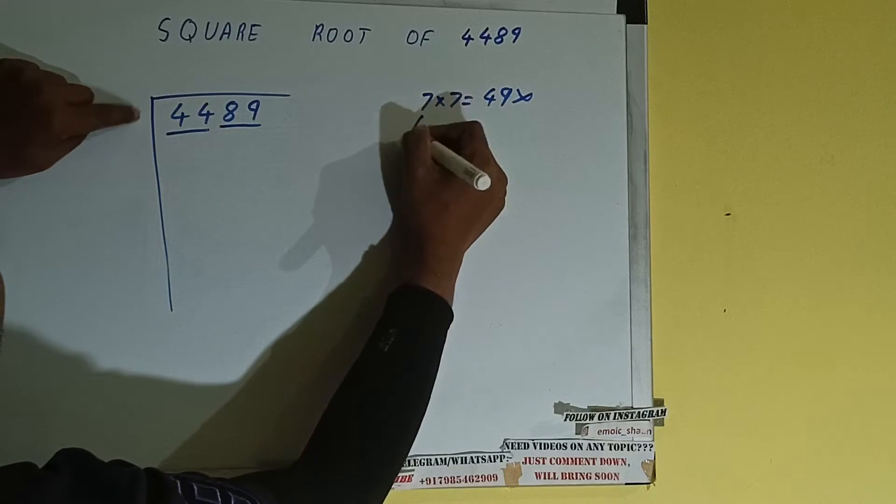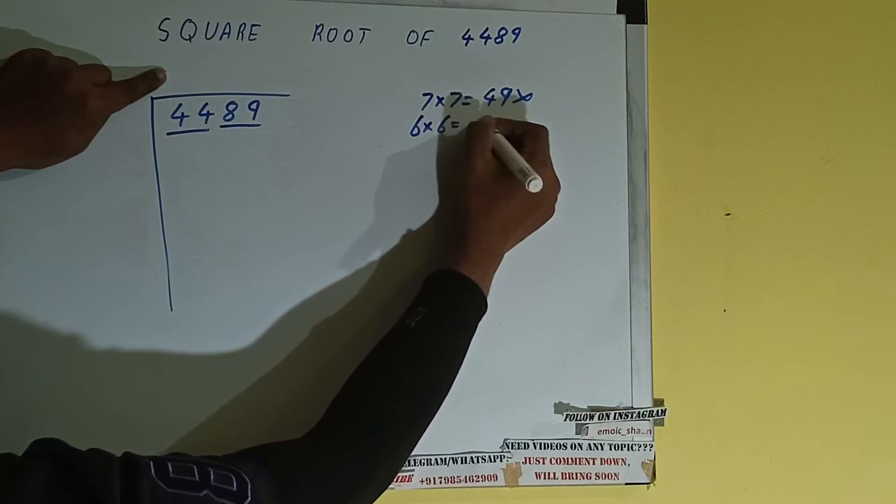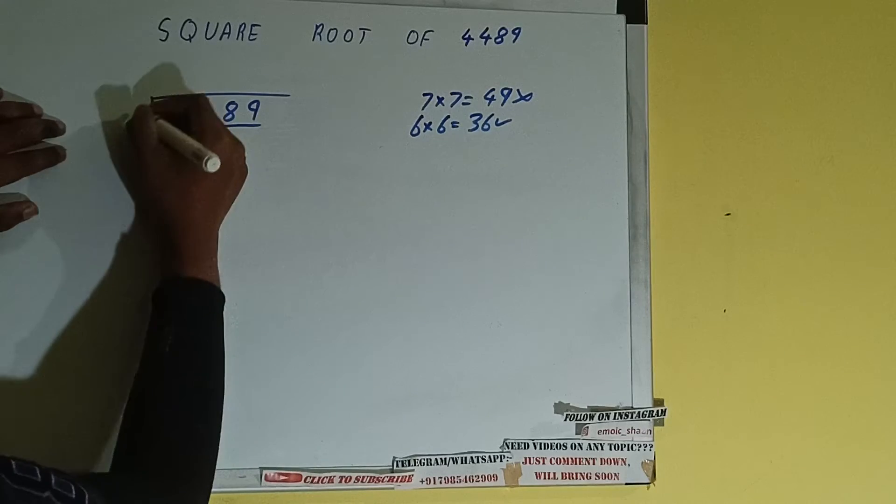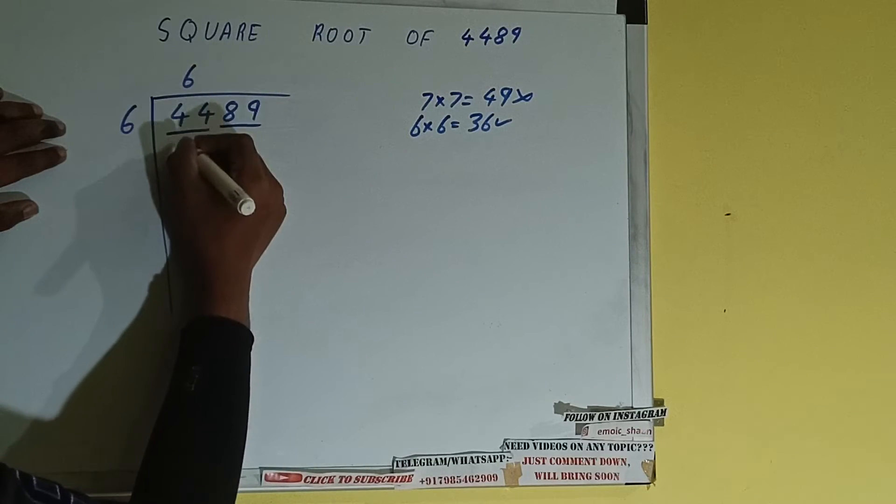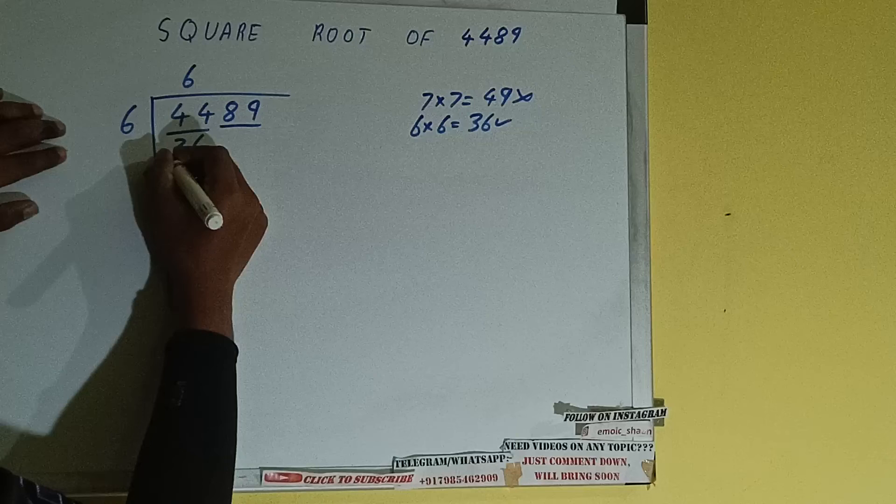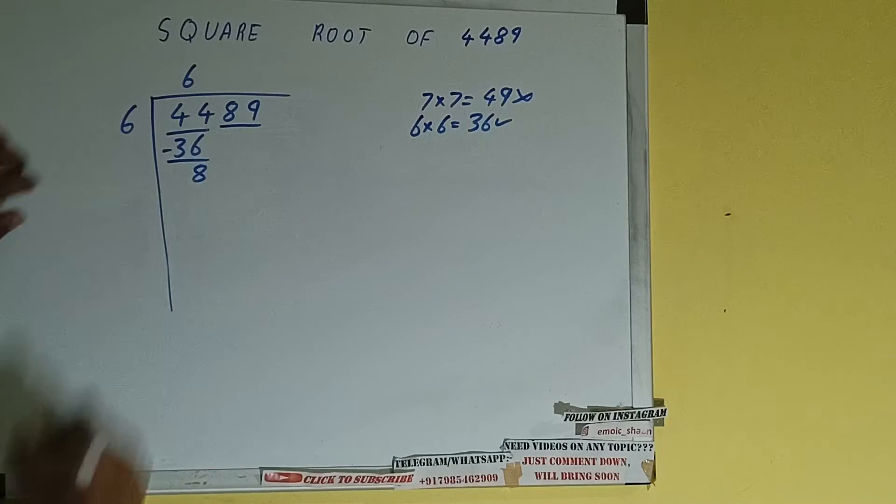If we write 6 here and 6 here it will be 36 which is good to take. So 6 here and 6 here, 36, subtract, 8 will be left.